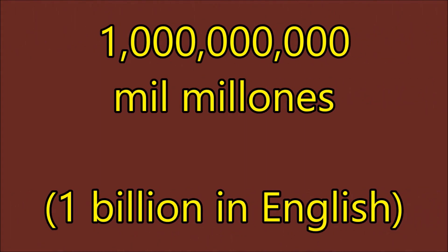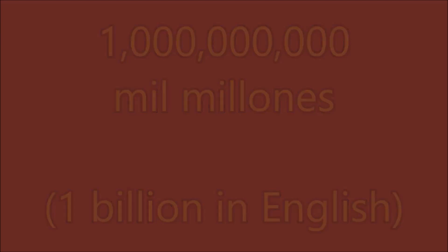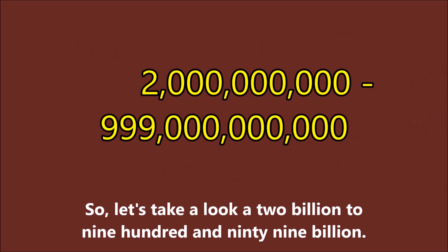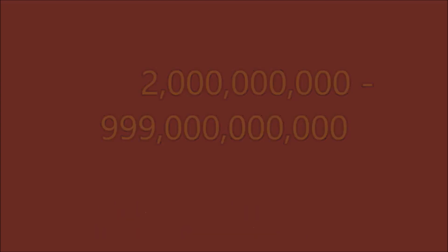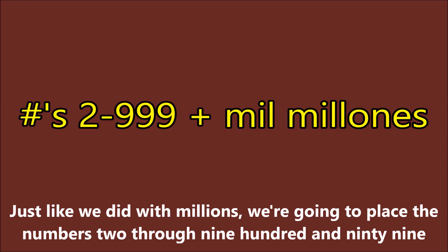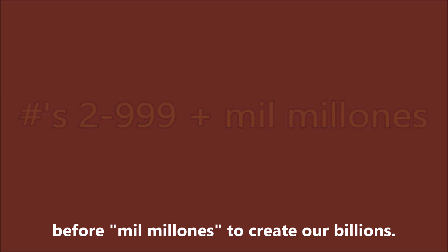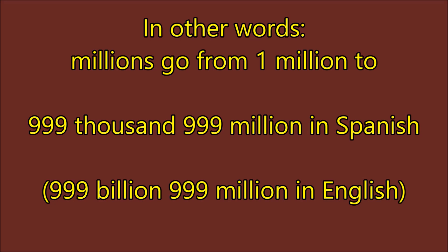One billion in Spanish is mil millones — the Spanish means a thousand millions. So let's take a look at two billion to nine hundred and ninety-nine billion. Just like we did with millions, we're going to place the numbers 2 through 999 before mil millones to create our billions. In other words, millions go from 1 million to 999,999 million in Spanish.